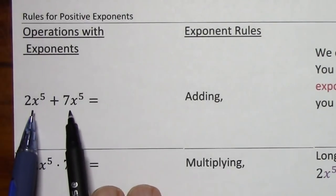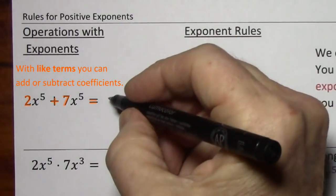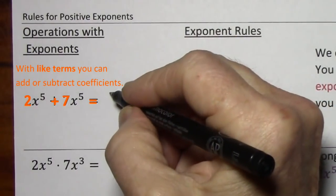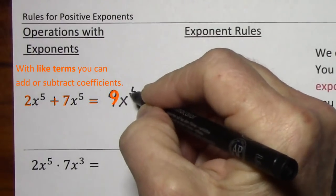However, over here we have the same variable and exponent. So this would give us 9x to the fifth.